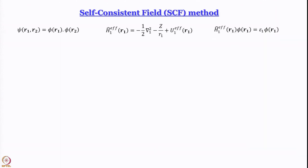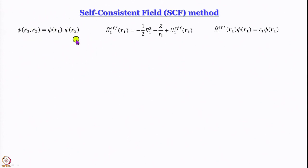Now we learn how to invoke self-consistent fields and solve these equations. This is the beginning of a ubiquitous technique that keeps coming back in computational chemistry. We are working under the orbital approximation — the wave function is a product of orbitals. As Atkins puts it, each electron is in its own orbital.